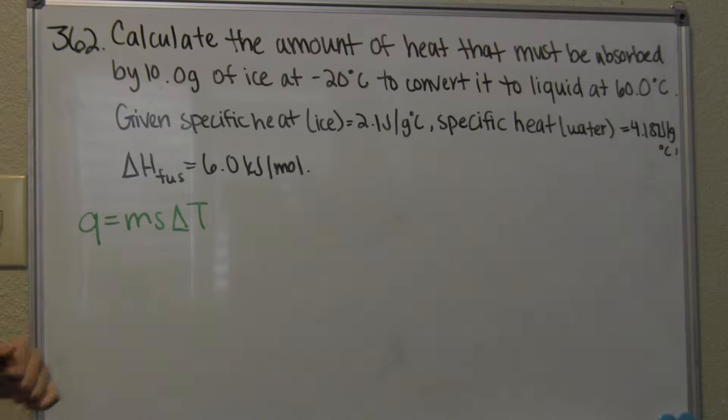The main formula that we're going to be using here is Q, which is heat, is equal to mass M, times S, specific heat, times delta T, which is temperature.